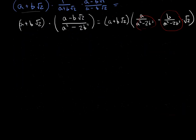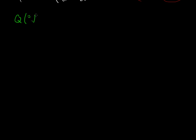Let's do another example. Let's try and figure out what Q adjoin the cube root of 5 would be. Our idea is we're taking the rational numbers and throwing in ∛5 and anything else we might need to keep this a field. We'll still have the rational numbers, represented by A. We have ∛5 in there, and same idea as before — we need any rational multiple of ∛5, so we add a B there. But there's something a little bit different about this one — this is a cube root rather than a square root.